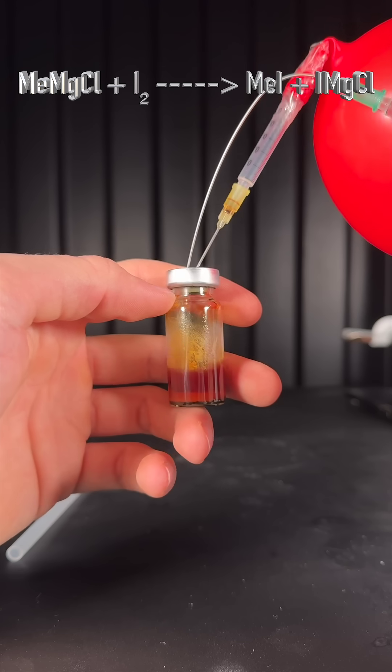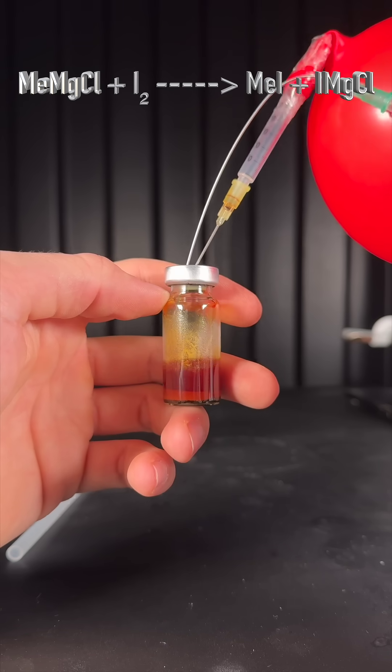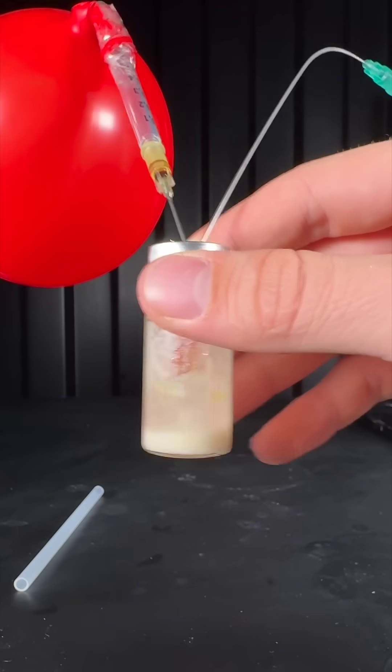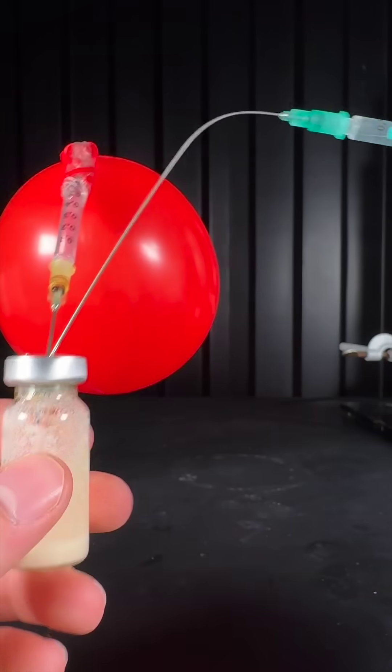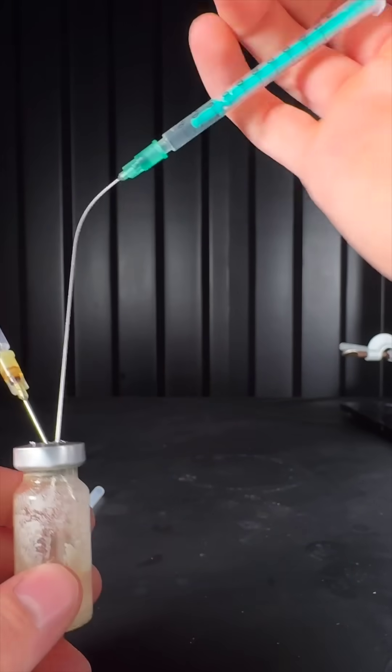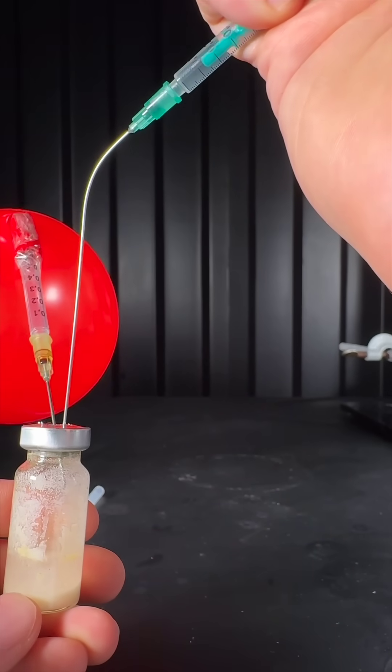I added Grignard reagent dropwise and shook the vial in between. When the color of iodine disappears, the reaction is finished. I used 0.68 ml of Grignard and that's close enough to the 0.66 ml I calculated.